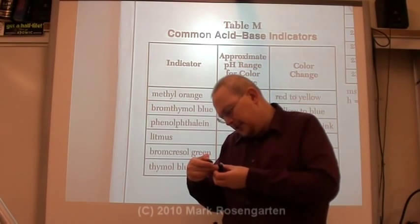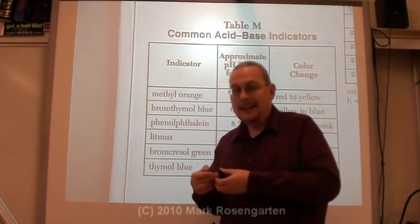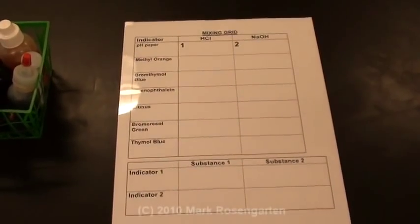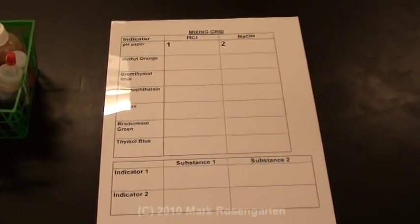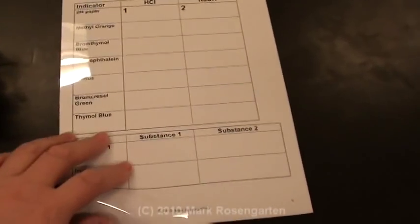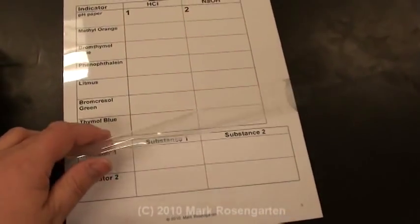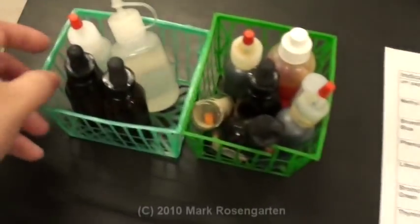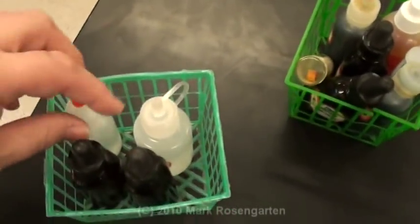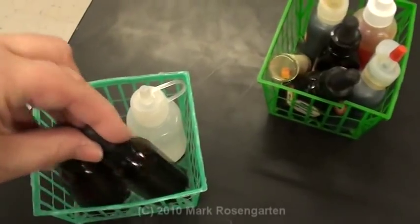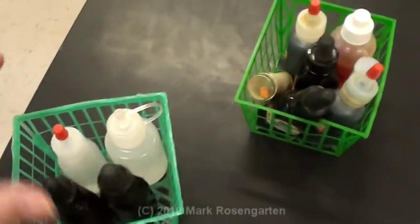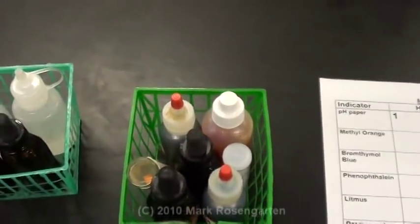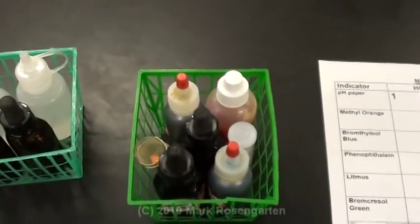Are you acids or bases? Well, I guess I'd better do the experiment to find out. The equipment you need for this lab is a mixing grid with a sheet of acetate film over the top of it, a container with your acid, base, and two mystery substances, and a container filled with all the indicators that are on reference table M.